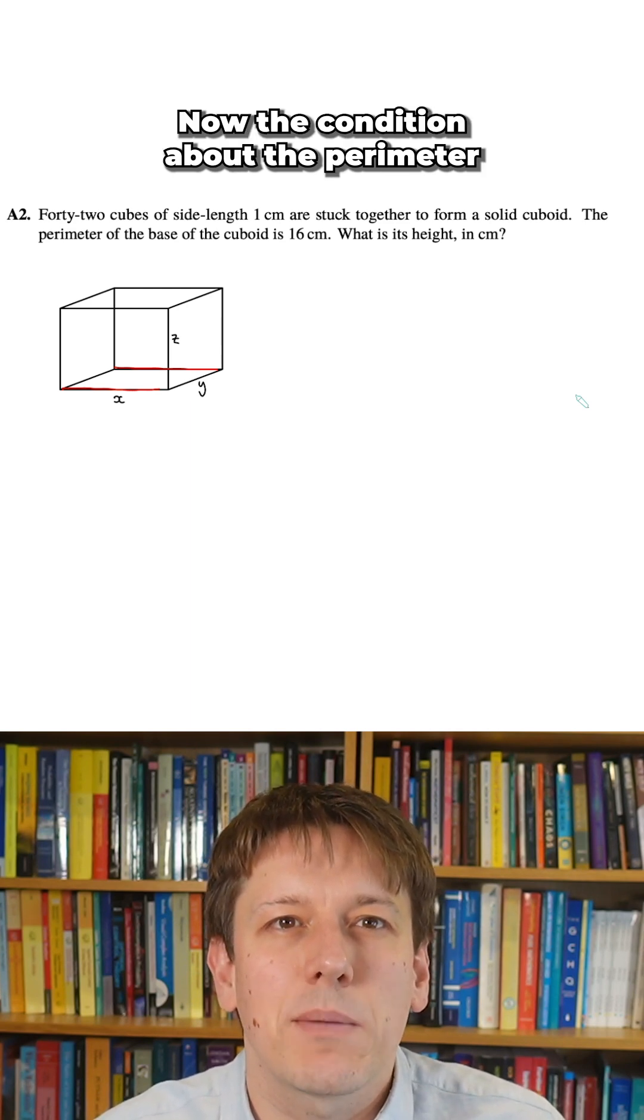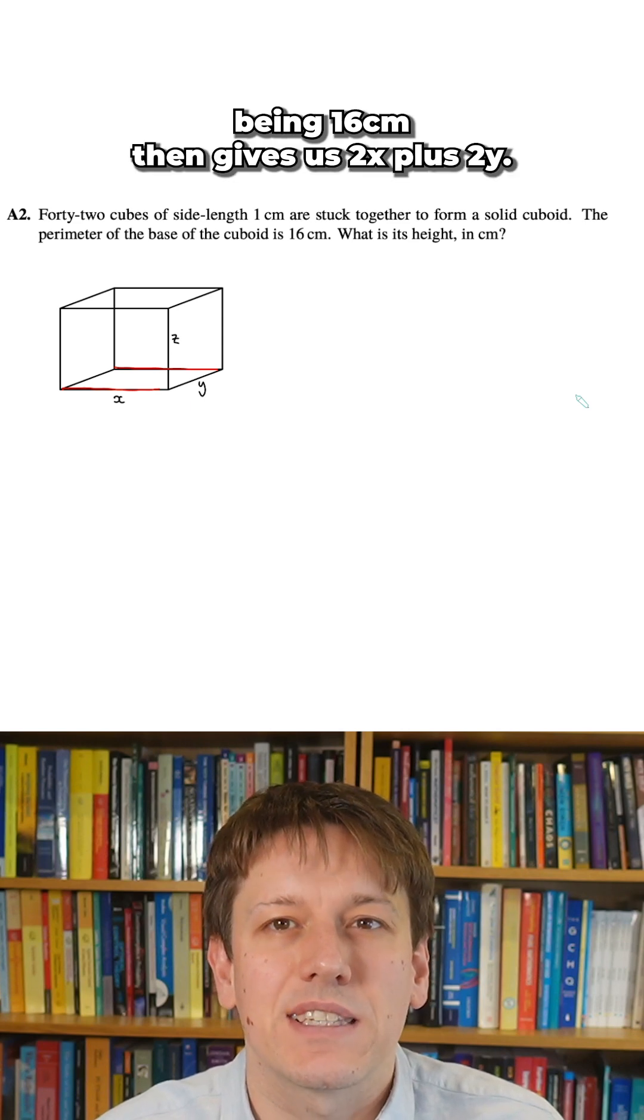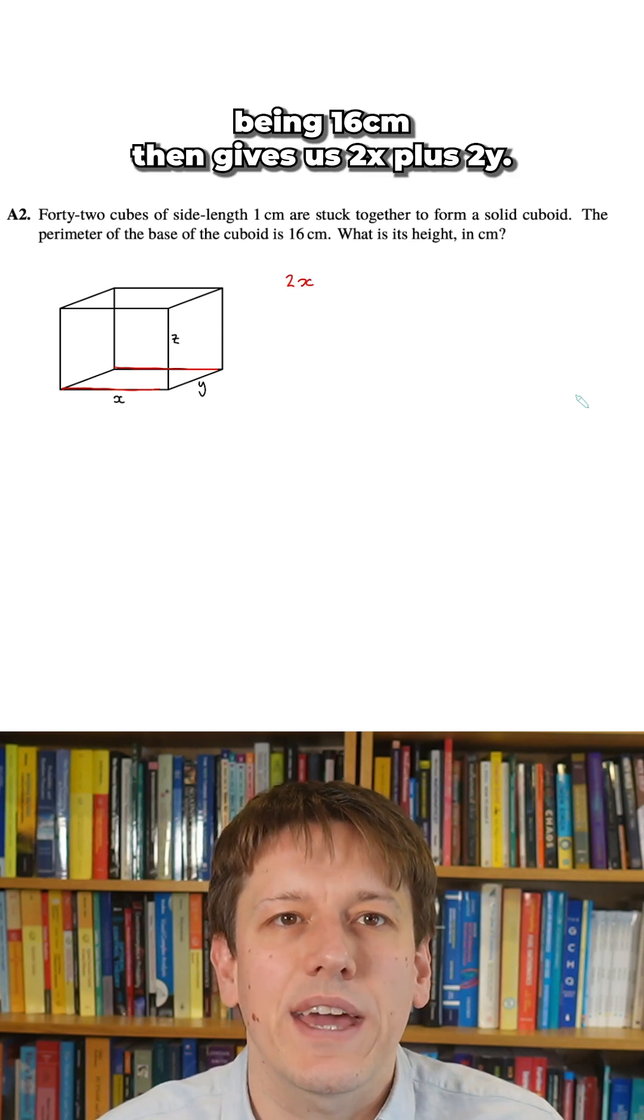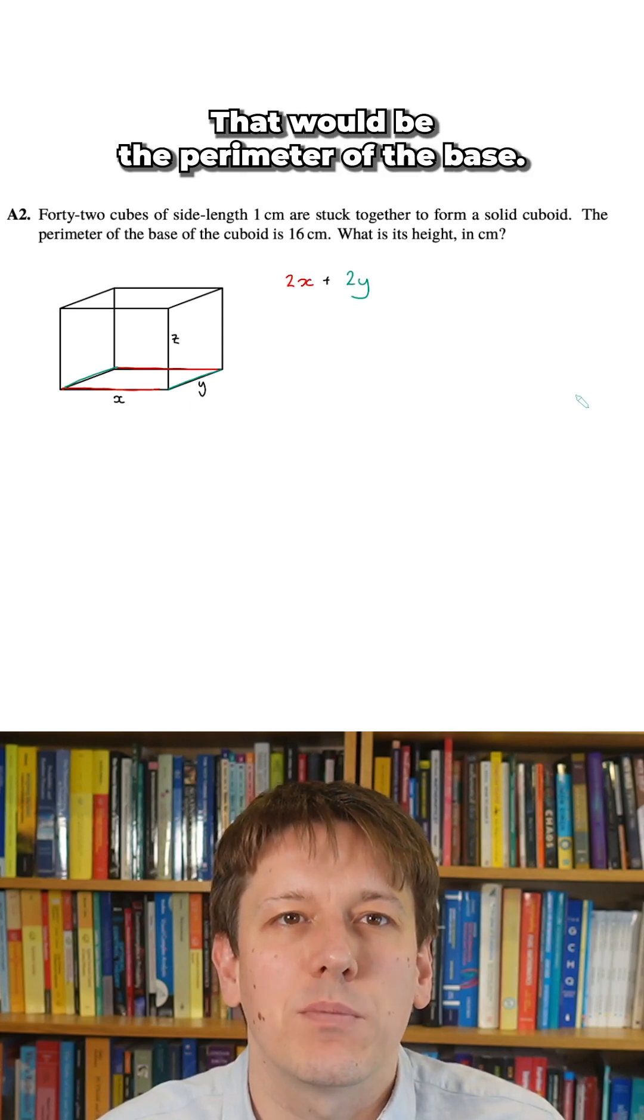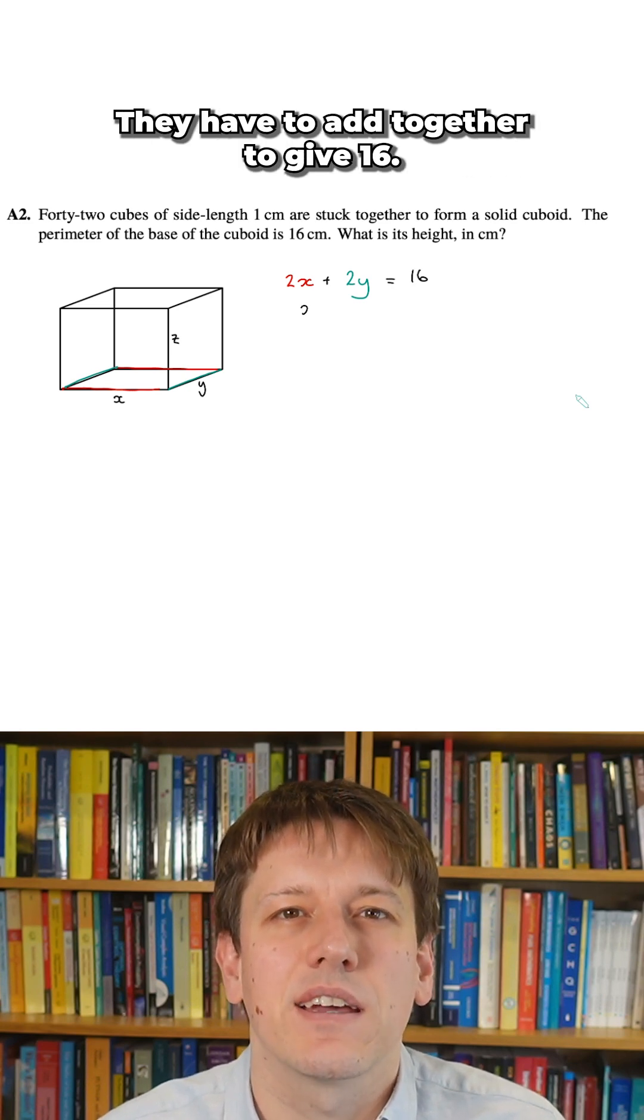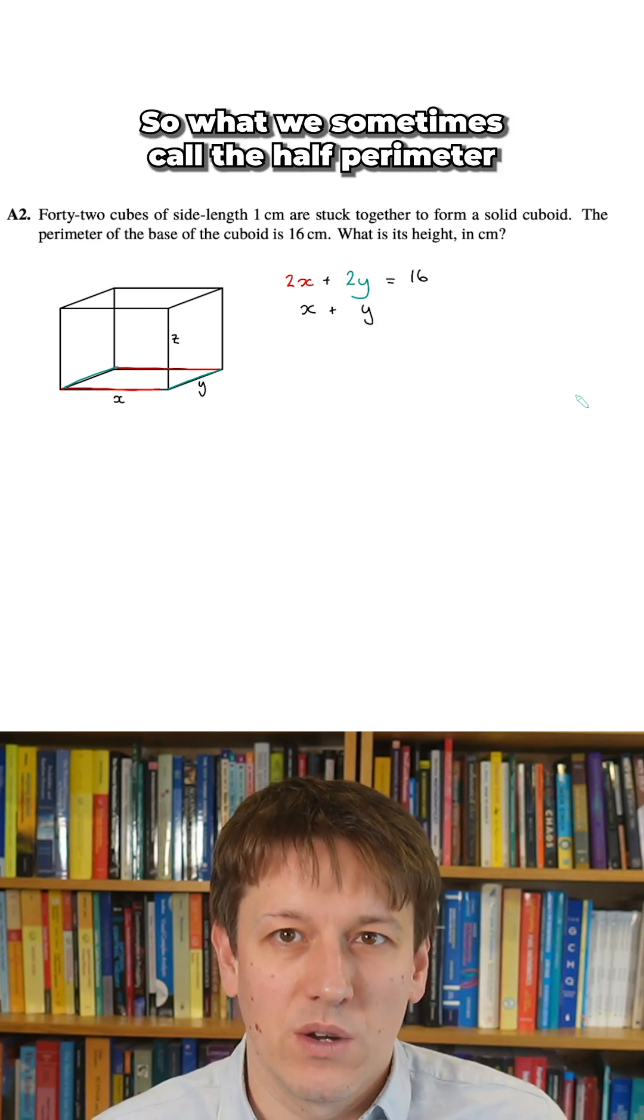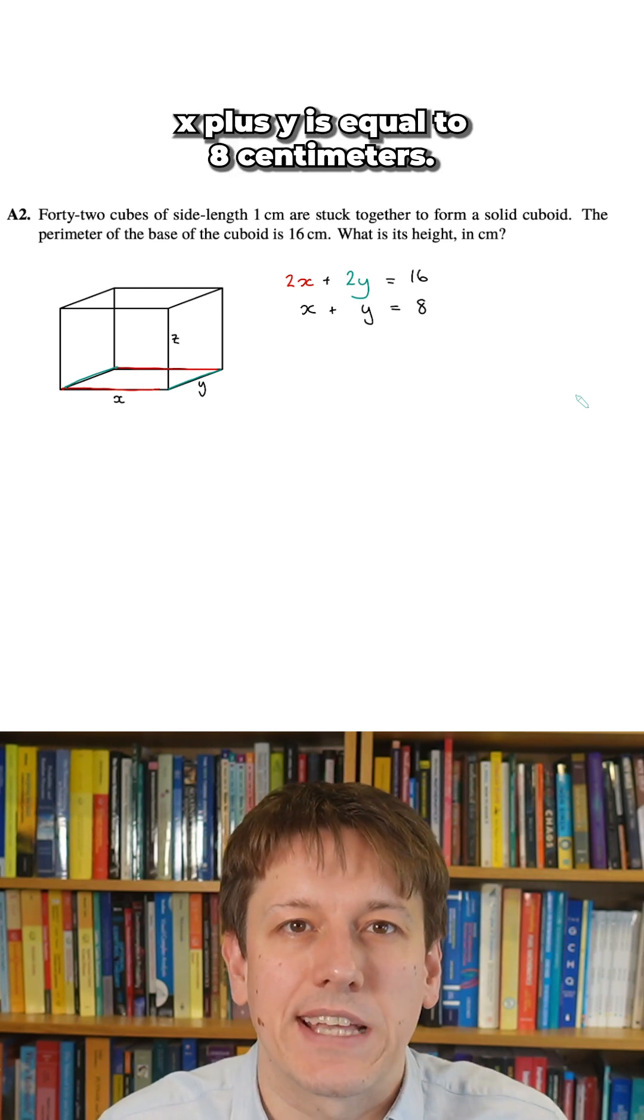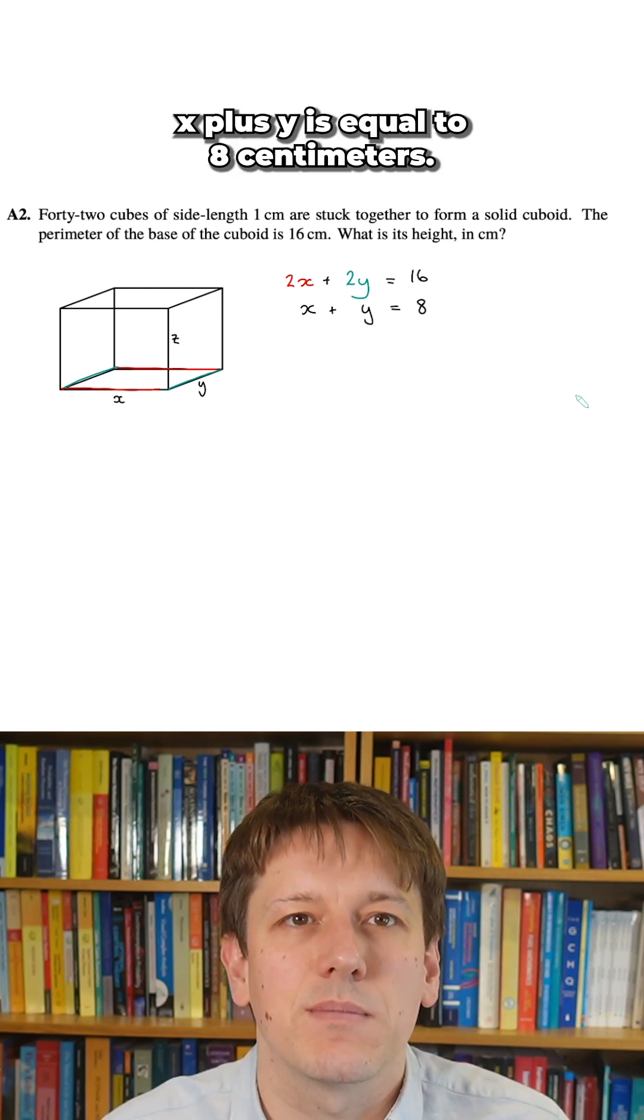Now, the condition about the perimeter of the base of the cuboid being 16cm then gives us 2x plus 2y. That would be the perimeter of the base. You can see those side lengths here. They have to add together to give 16. So what we sometimes call the half perimeter, x plus y, is equal to 8cm.